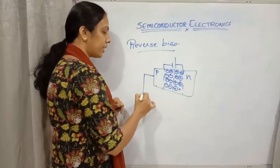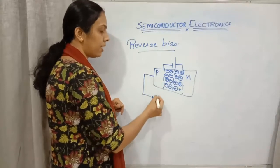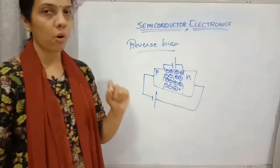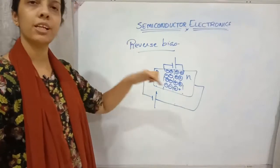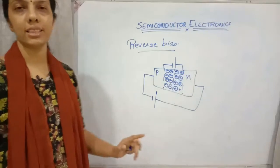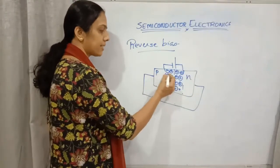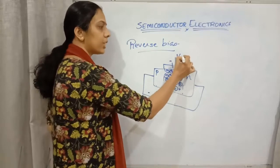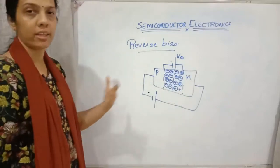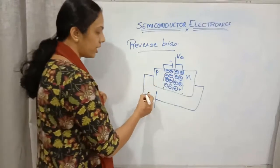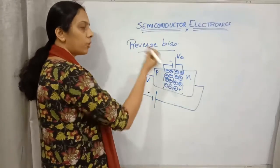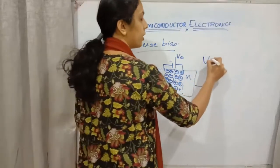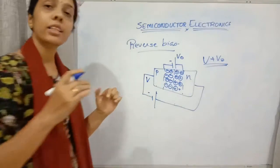Now if we are connecting this PN junction under reverse bias, we connect P to the negative terminal and N to the positive terminal — this is called reverse biasing. In forward biasing, we connected P to positive and N to negative. Here, if V₀ is the barrier potential and V is the applied potential, both are of the same polarity, so the net potential will be V plus V₀.